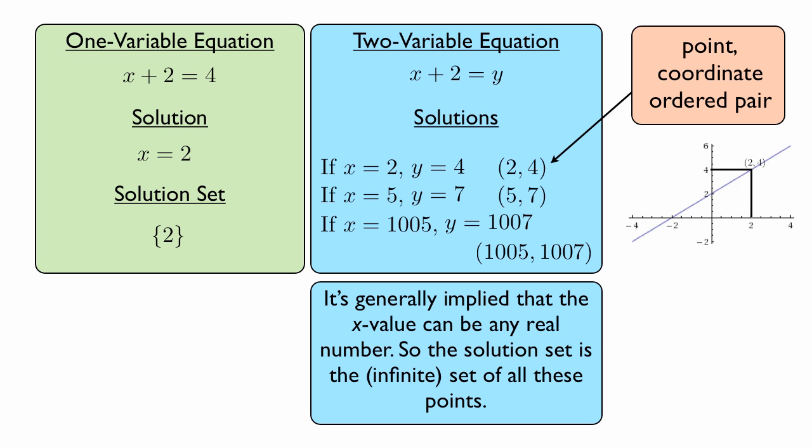And so just like before, the point (2, 4) lies on the line. And if we pick, let's say, x equals 4 and looked at the corresponding y value for that, it would be 6. So the point (4, 6) would lie on the line.